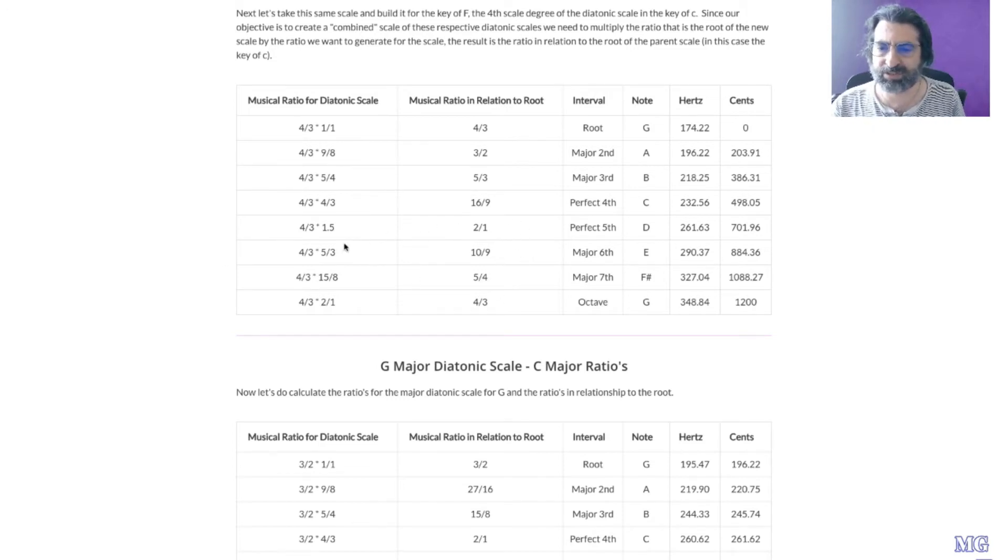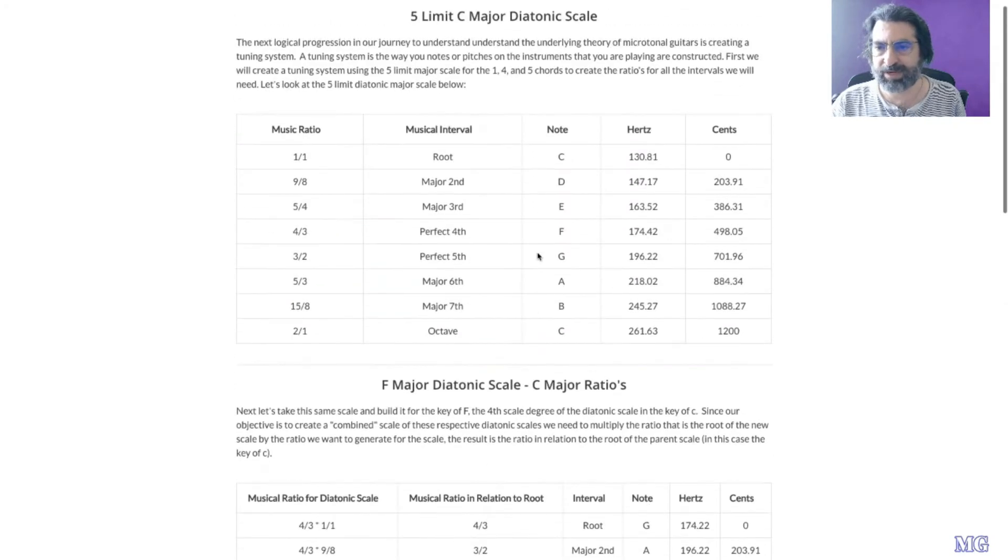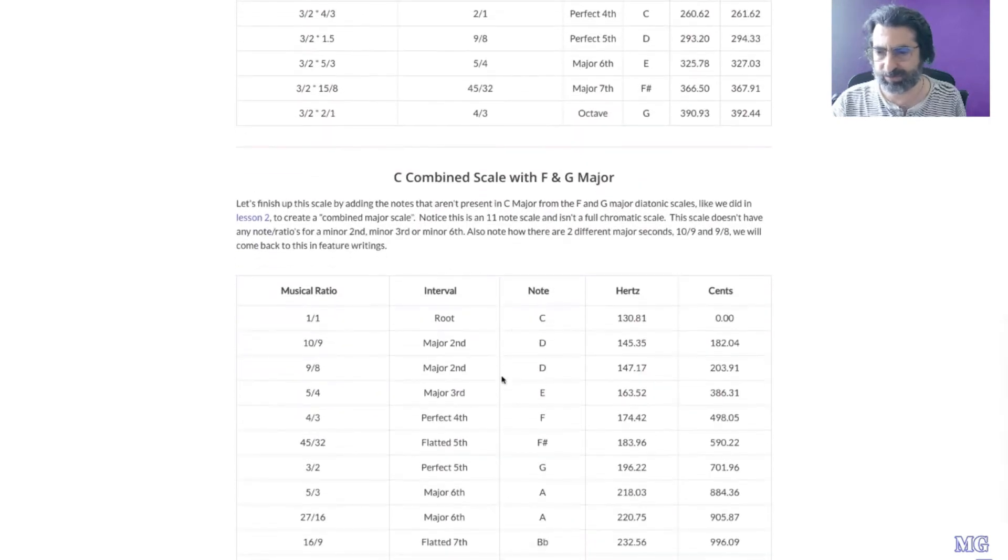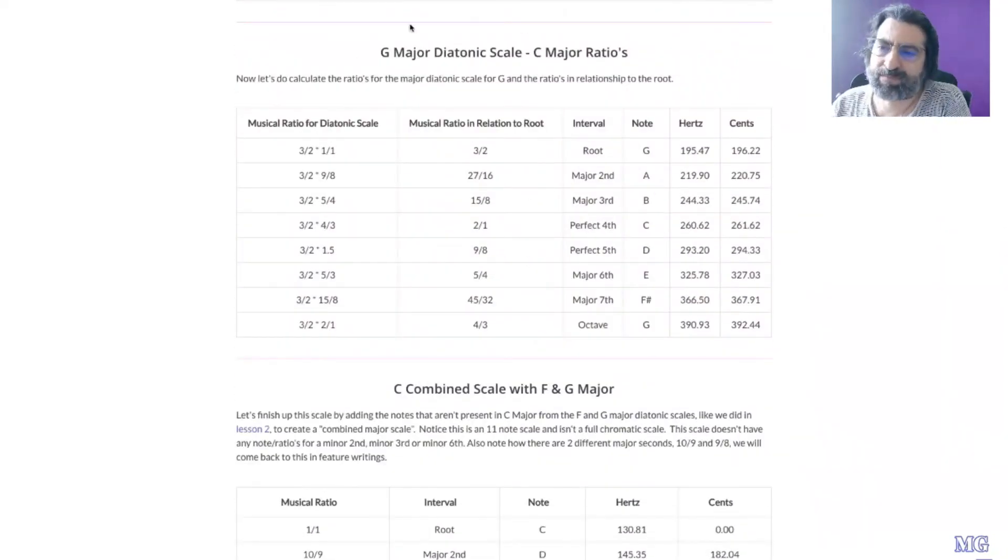In just intonation, certain frequencies or ratios aren't going to match their counterparts. So a perfect 4th up of 5 over 3, in equal temperament those are the same note. Here this is a type of major 2nd from the root, and it's a slightly different pitch, it's a comma away from its counterpart of 9 over 8 from the parent scale. And so now we've got our 5 chord, in this case in the key of C, G, and here we've got a new 27 over 16 and a new 45 over 32.